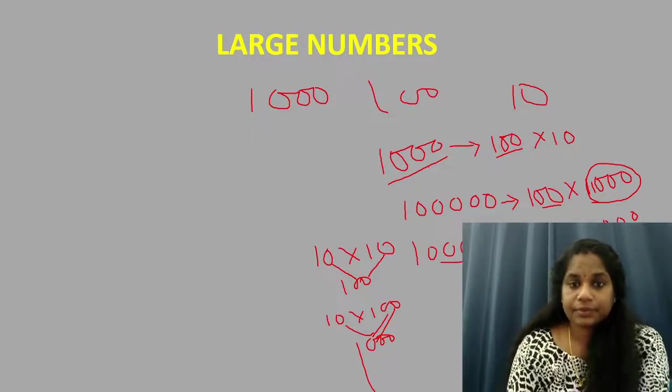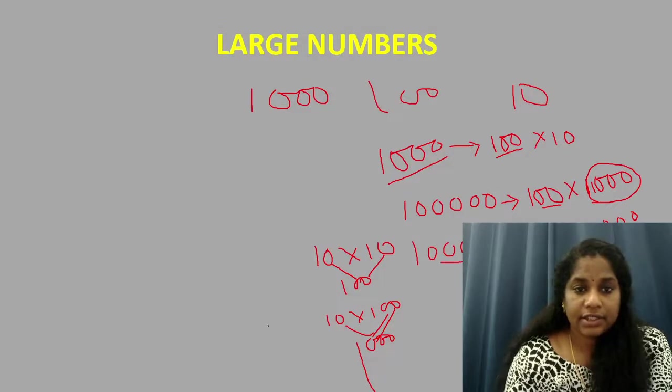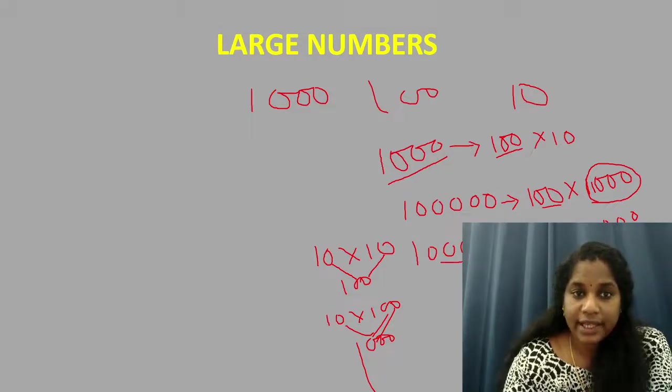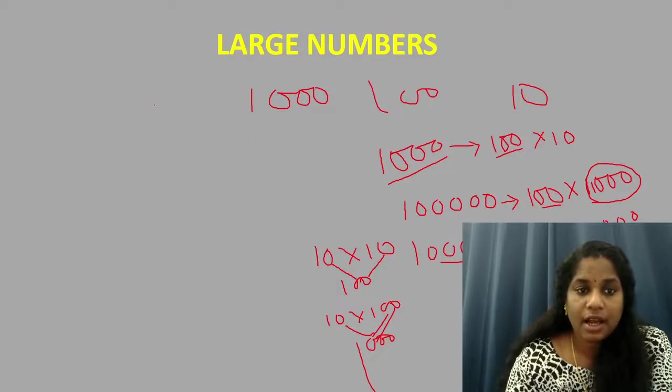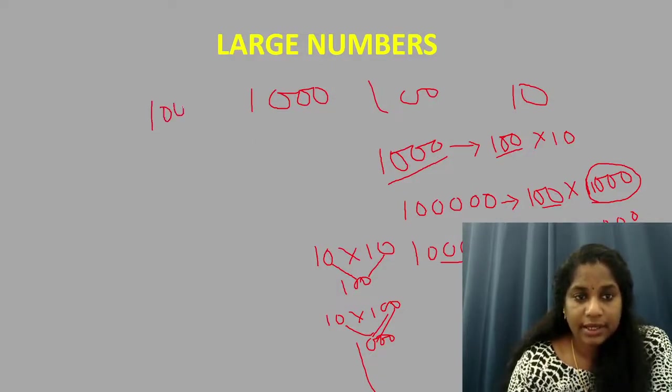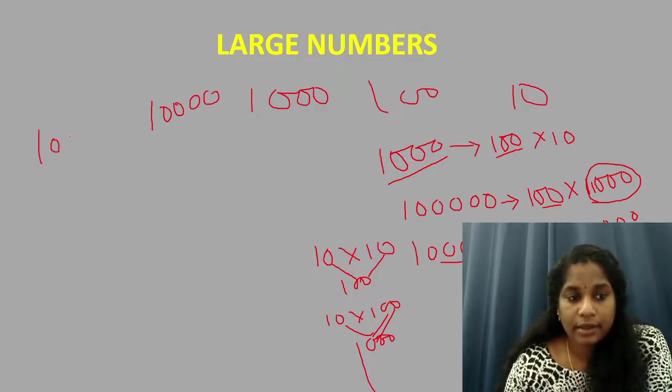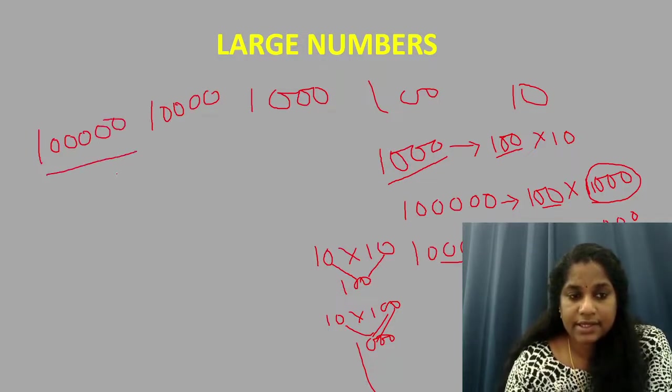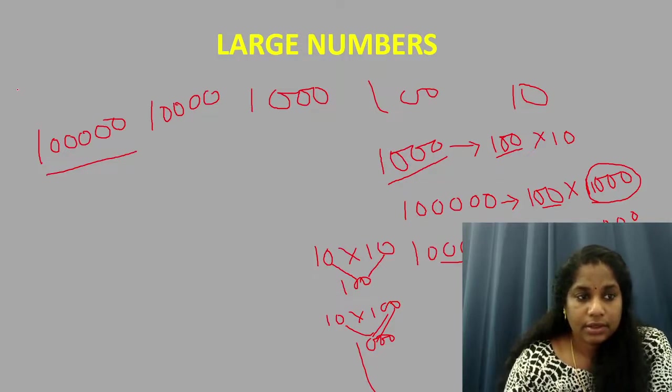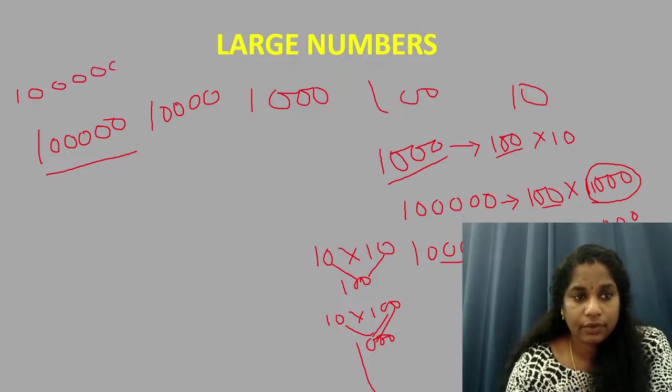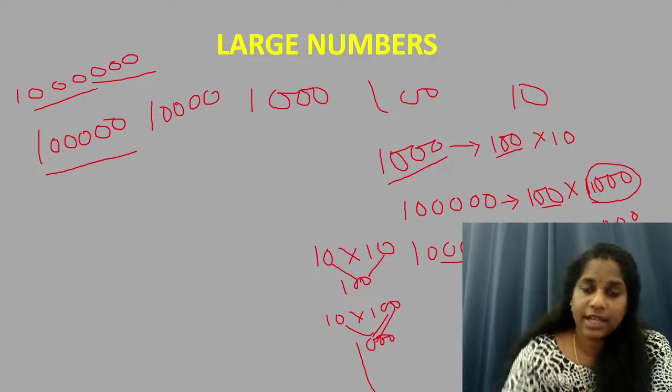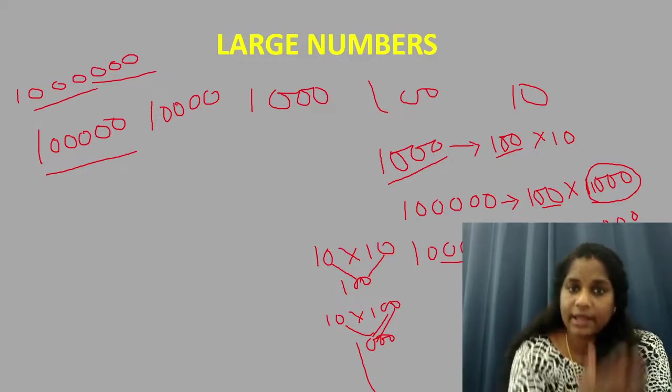Is that clear? So like that after thousand comes ten thousand. After ten thousand comes one lakh. So let me write ten thousand. Then comes your one lakh. One, two, three, four and five. It's a six digit number. Ten lakhs. One, two, three, four, five and six. This is ten lakhs. And after that comes your crore, ten crore and like that it goes on.